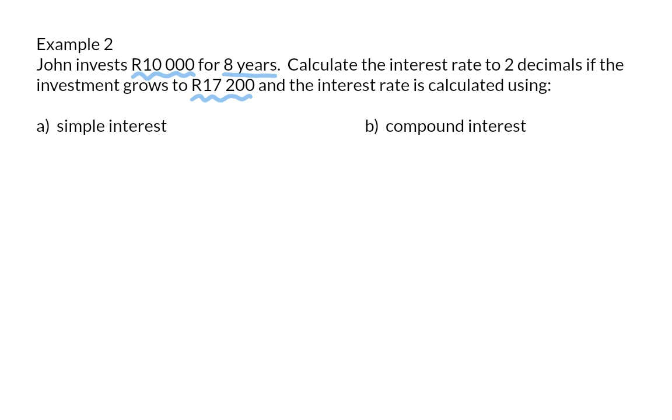So here we have a starting value of 10,000 rand that grows to a final amount of 17,200 rand in 8 years. To calculate I, the interest rate, and firstly doing that for simple interest we will use the simple interest formula.